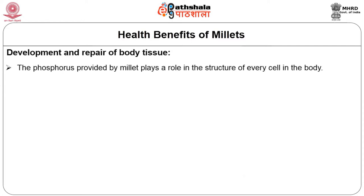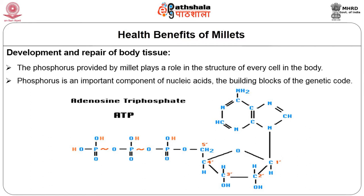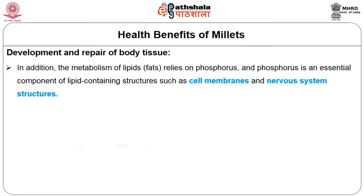The next important function of millet relates to the development and repair of body tissue. The mineral phosphorus provided by millet plays a role in the structure of every single cell in the body. In addition to its role in forming the mineral matrix of bone, phosphorus is an essential component of numerous life-critical compounds including adenosine triphosphate or ATP — the energy currency of each cell. Phosphorus is also an important component of nucleic acids, the building blocks of the genetic code. The metabolism of lipids and fats relies on phosphorus, which is an essential component of lipid-containing structures such as cell membranes and nervous system structures.